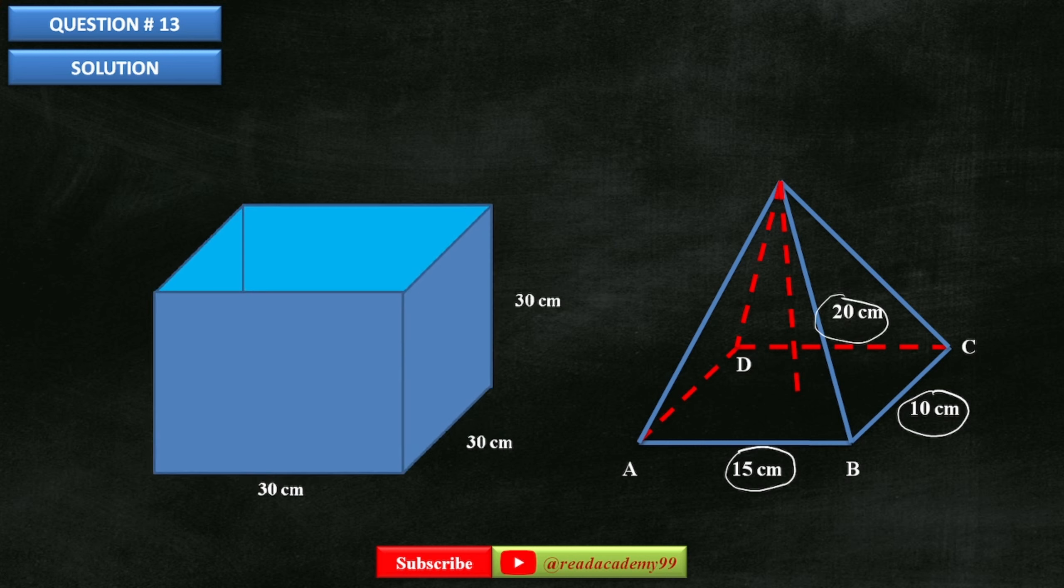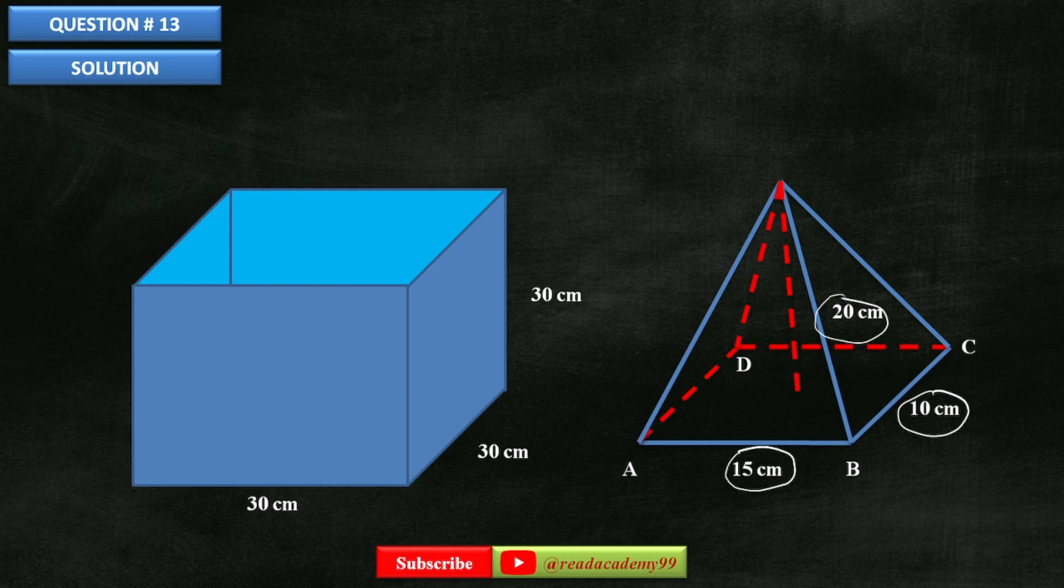Place this pyramid inside a cubical container which is 30 cm by 30 cm by 30 cm and fill the tank with water. When we remove the pyramid from the container, the volume of water gets low.